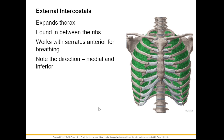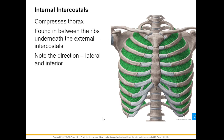Deep inside the ribs we have the external intercostals. Their job is to expand the thorax — elevating the ribs for breathing. Note the direction: medial and downwards, similar to your external abdominal oblique, like a letter V. Underneath the external intercostals is your internal intercostals, which compresses the thorax — the opposite of the external intercostals. Its fiber orientation runs downwards and lateral, like a letter A.